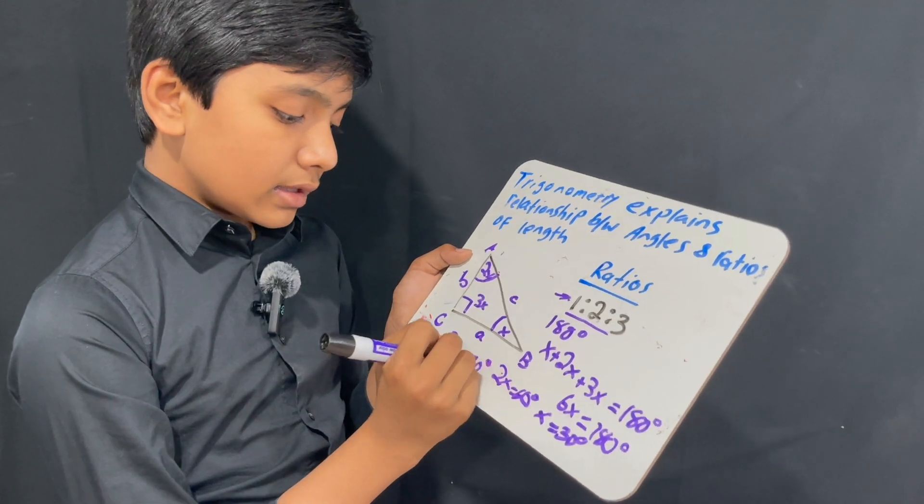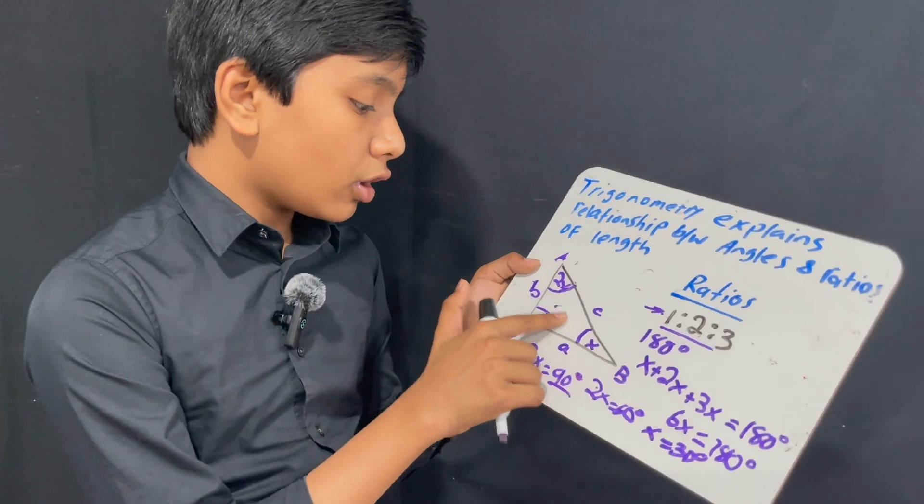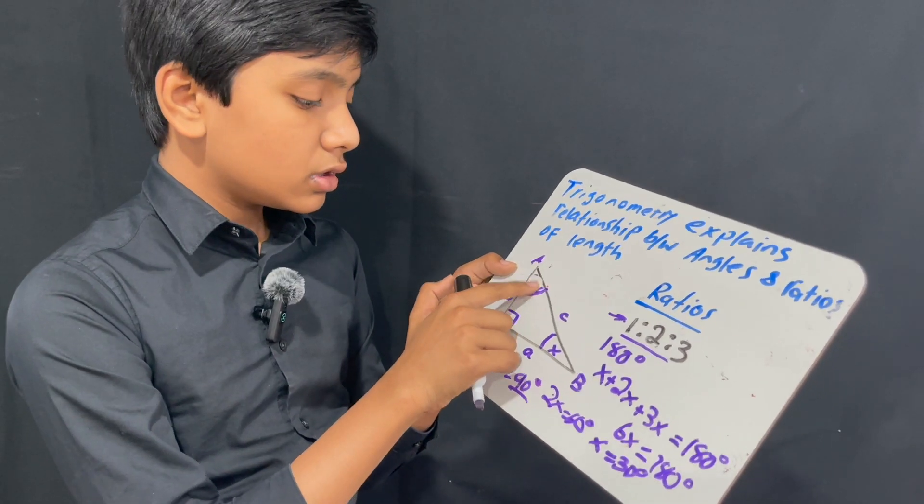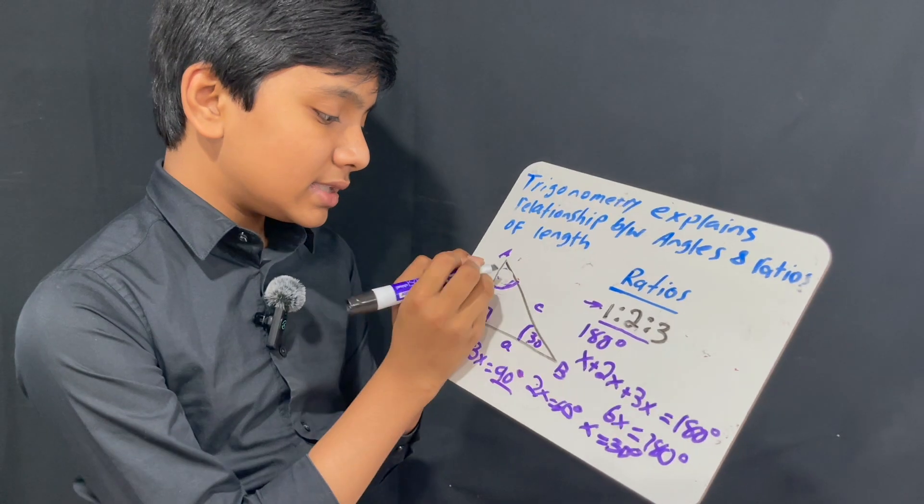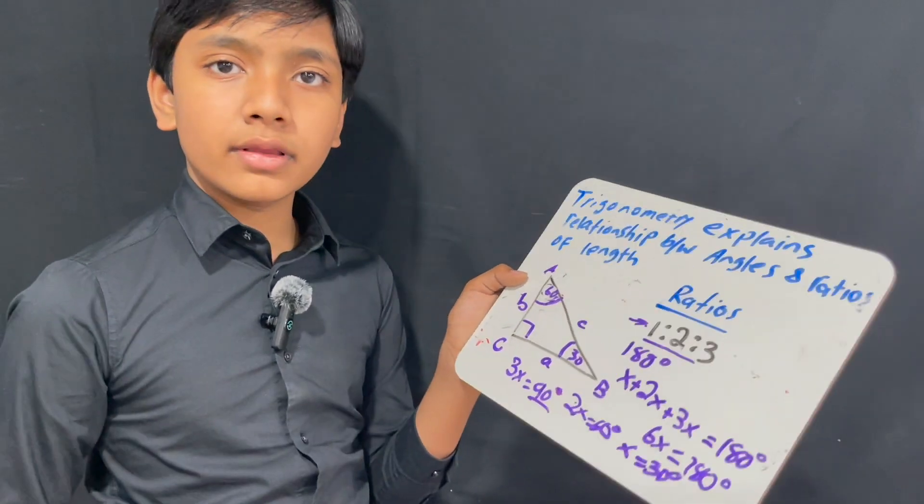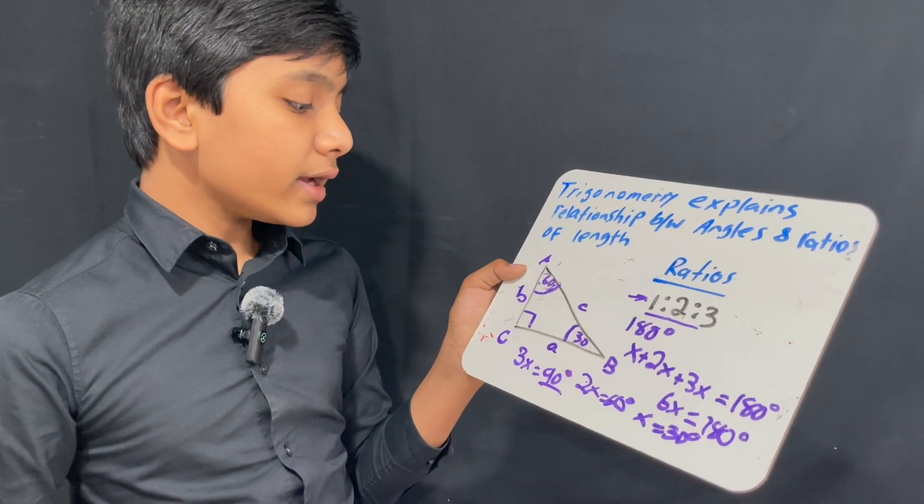And this 90 degrees is very special, we call these right angles. So, this is what we call a 30-60-90 triangle. And as for the side lengths,